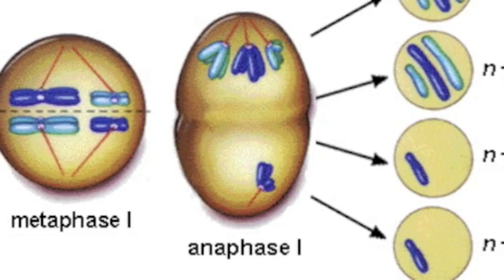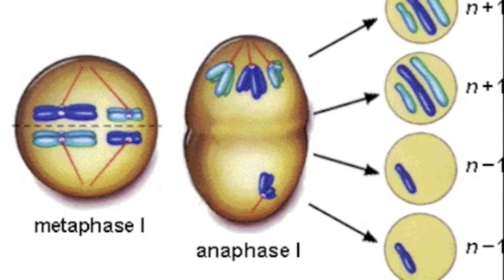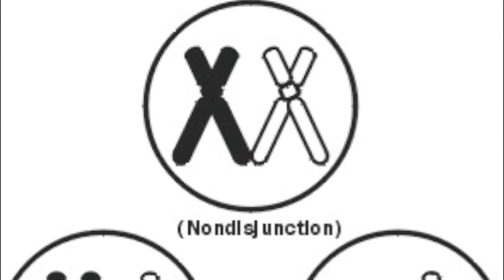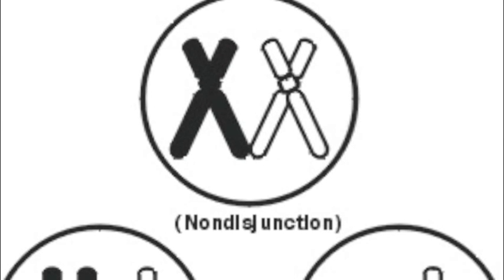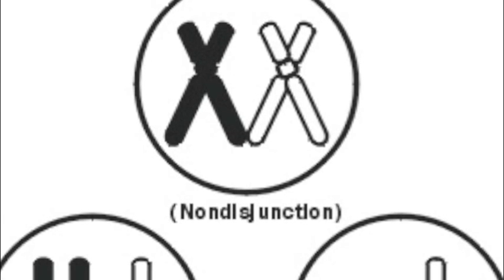When there are defects in the meiotic process, disorders such as nondisjunction can occur. This is when there is a failure of chromosome pairs to separate during cell division, and results in an imbalance of chromosomes. Nondisjunction could lead to diseases such as Down syndrome.